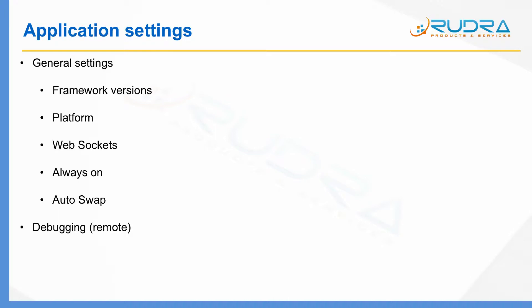The next thing is debugging. You will be able to remotely debug your web application within Azure App Service. Basically, you can remote debug from Visual Studio and investigate the issue. I'm going to show you practically how you can enable it in the monitoring section of this course.